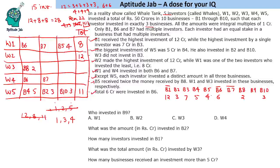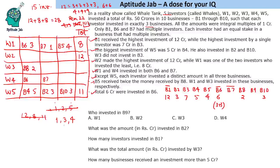Since b6 totals 6 crores and can't have 6 investors of 1 crore each, it must have 2 investors of 3 crores each (3+3). So b6 = 3 crores per investor. Then w1's investment in b7 is 1 crore. B7 is a multi-investor business so this 1 crore is w1's share, not the total — we still need to find the other investors.